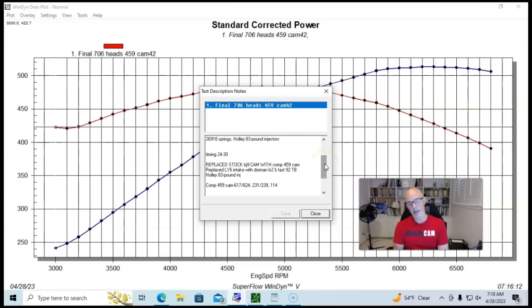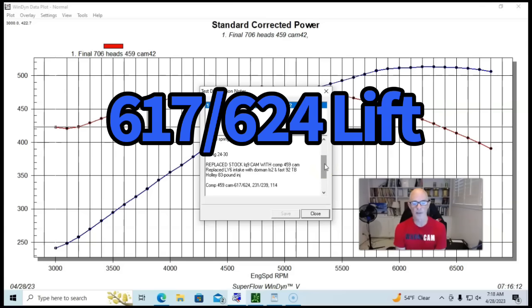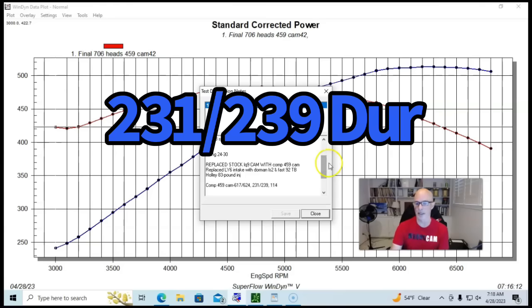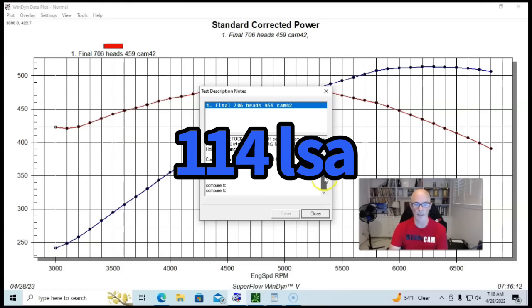We swapped out the VVT cam for a Comp 459. It's a 231-ish cam that works well on these 6-liter. We had stock rockers and hardened pushrods and springs and injectors, and obviously had a Holley HP management system. This thing ran best with 30 degrees of total timing. And there's our cam specs, 617-624 lift, a 231-239-degree duration split and a 114-degree lobe separation angle.